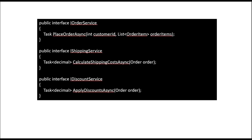You might also identify domain-specific operations such as PlaceOrder, CalculateShippingCost, and ApplyDiscounts. These domain-specific operations are defined in interfaces like IOrderService, IShippingService, and IDiscountService.